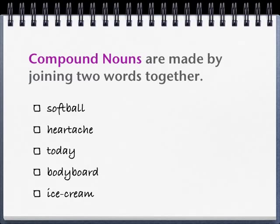Compound nouns are made by joining two words together. For example: softball, heartache, today, bodyboard and ice cream. Sometimes compound nouns will have a hyphen joining the two words together.